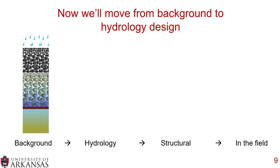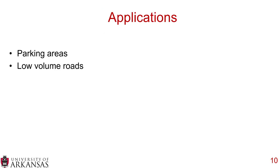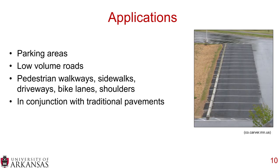That is a background of pervious pavements. Now we're going to talk about applications and hydrology. We use pervious pavements usually in lower volume roads — parking areas or actual roads. We can also use them on pedestrian walkways, sidewalks, driveways, bike lanes, and shoulders. They're often used in conjunction with traditional pavements, where, for example, cars drive on dense-graded asphalt but parking spaces are pervious pavement.